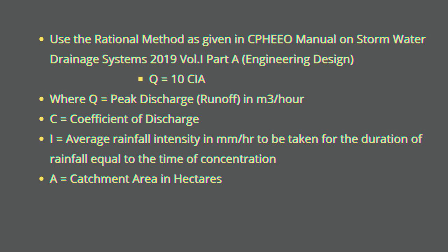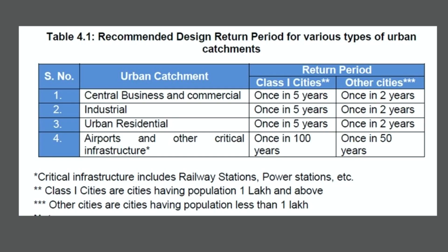The recommended design return period for various types of urban catchments is given in Table 4.5, also attached in the description. It covers class 1 cities and other cities. Class 1 cities have a population of more than 1 lakh, while other cities have a population of less than 1 lakh.